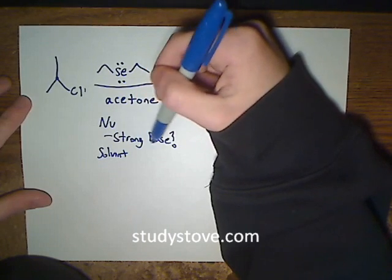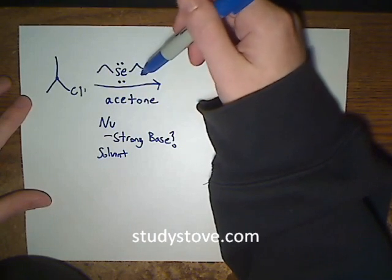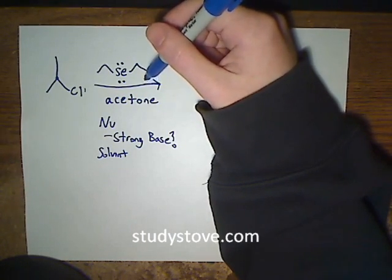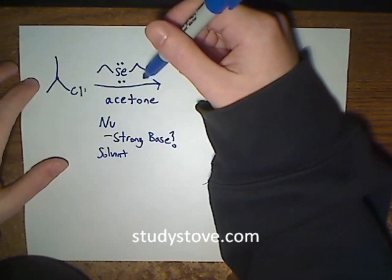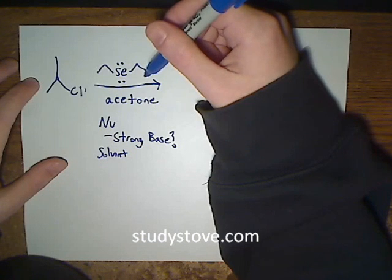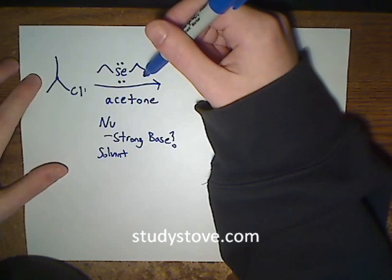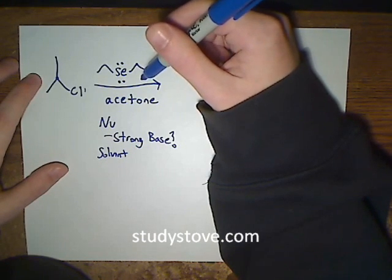The next thing to check is whether it's a strong base, and this is not a strong base. Typically, strong bases have a negative charge, like a hydroxide ion. Because it's not a strong base, we know we're not going to have an elimination reaction.